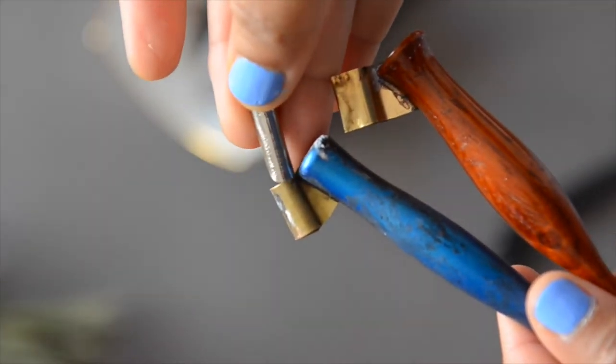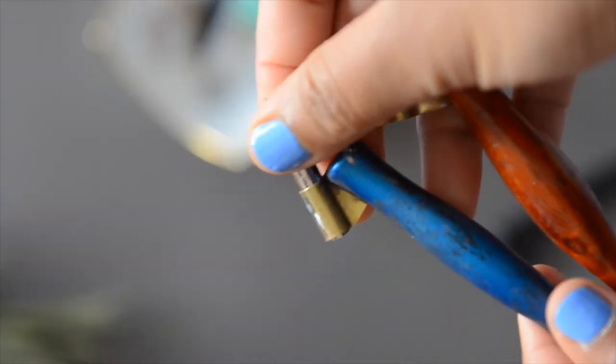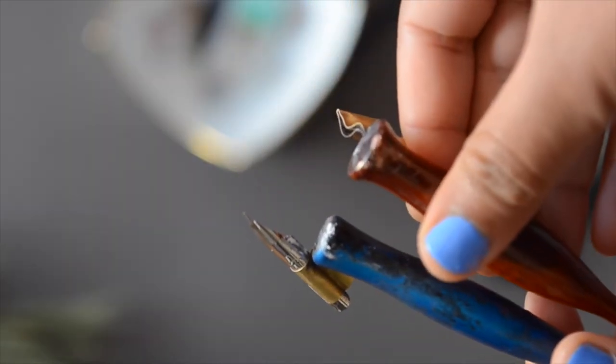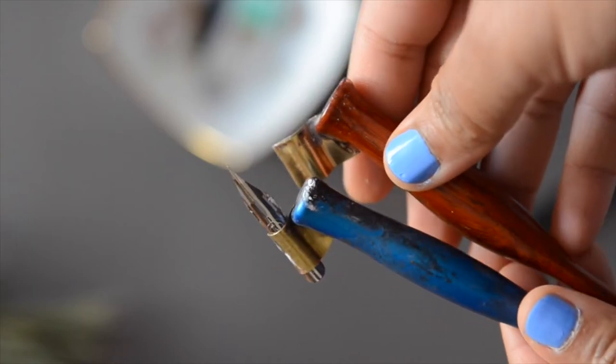Nowadays, you can find a lot of fancy holders that are made of fancy woods or carved intricately. That doesn't matter for the quality of your writing. So just focus on getting something from a reputable brand. The one on the left is a Speedball Deluxe and the one on the right is a Michael Sull.